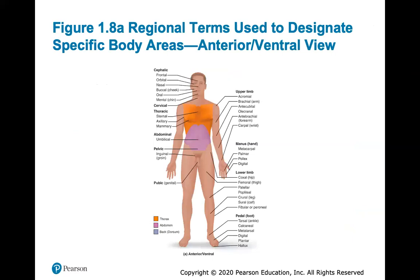Here's a look at regional terms used to designate specific body areas. It's a good idea to know these, and you probably have familiarity with them from anatomy. Frontal, orbital, nasal, buccal — which has to do with the cheek — oral, mental, cervical, thoracic, abdominal, pelvic: they all have to do with specific body regions. Structures within these regions will often take on the name of the region they're associated with.